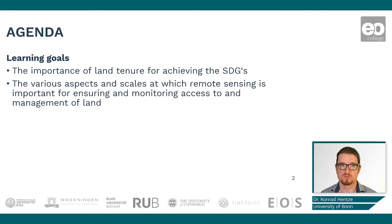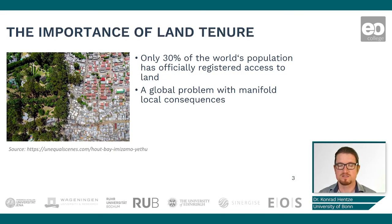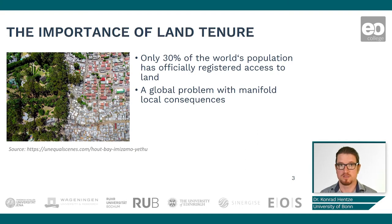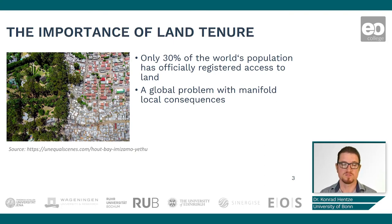We will look at how to monitor the access to land and resources, and also how to contribute to and ensure access to land and land management. So why is land tenure actually so important? It's one of the global pressing issues of our time. As of now, only 30% of the world's population has officially registered access to land, and this can be in urban environments, as shown in the picture, but it is especially a problem in rural areas.